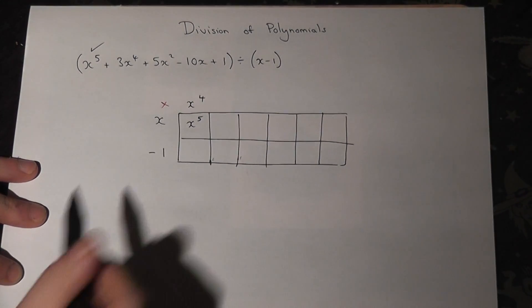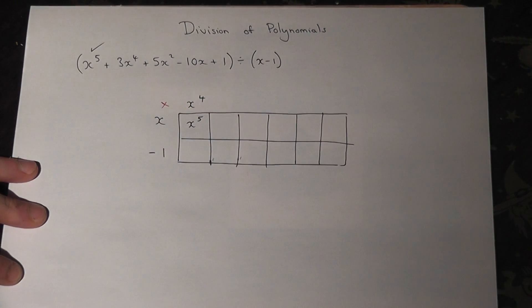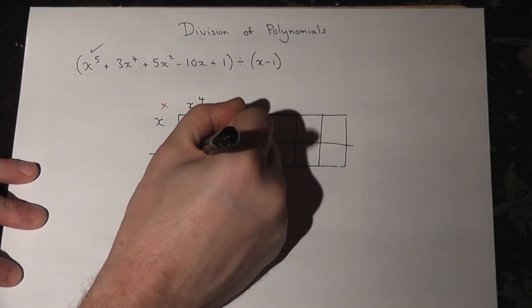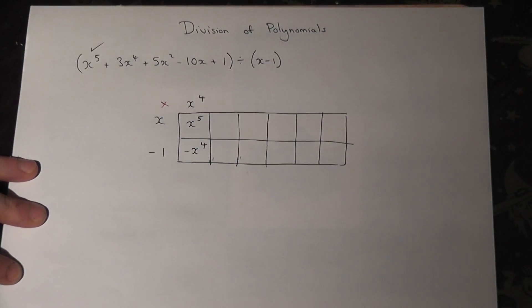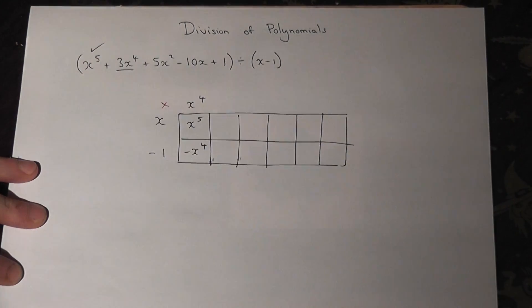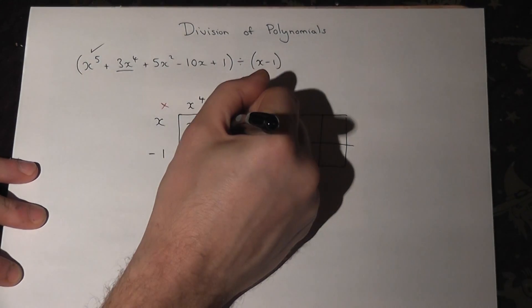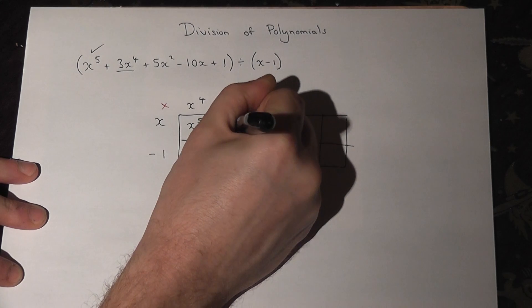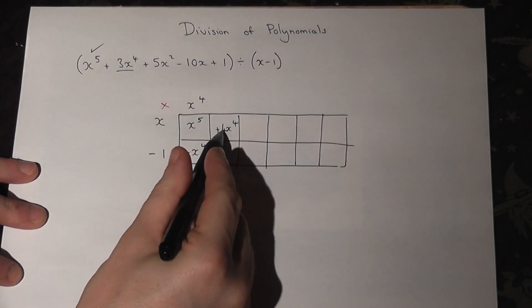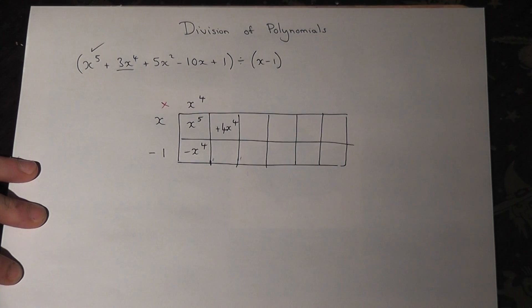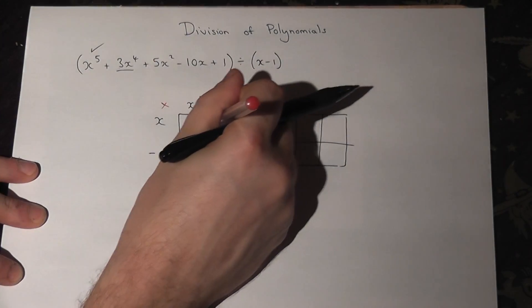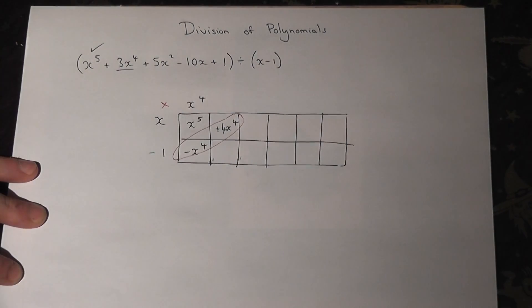But there's a minus 1 here, and minus 1 times x to the power of 4 is minus x to the power of 4. But I need 3x to the power of 4, so I need an extra 4x to the power of 4. Minus 1 plus 4 is 3, and these give the required numbers of x to the power of 4.